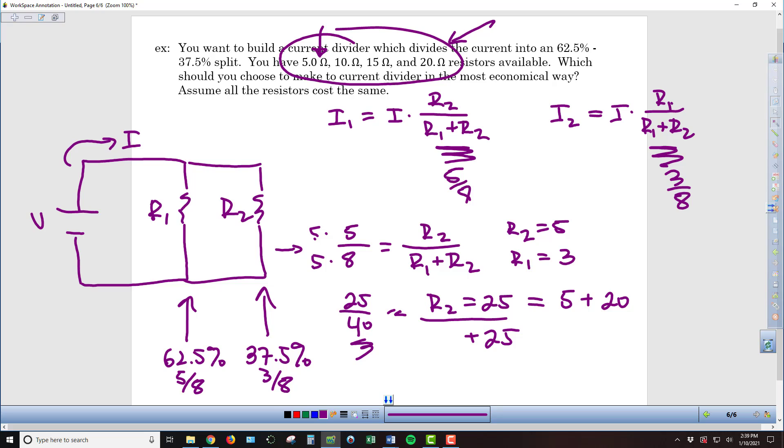So it needs to be that multiple of 5, that means R1 has to be 15, which means I can create it out of just a 15 ohm resistor.